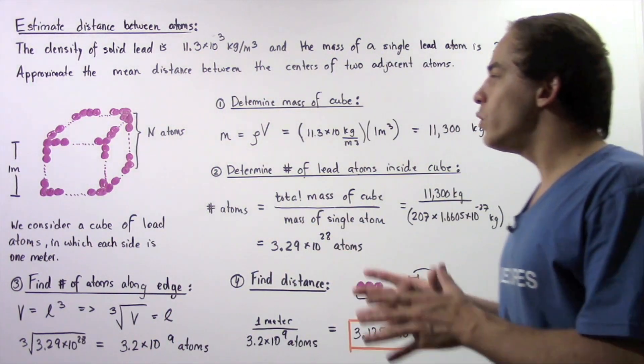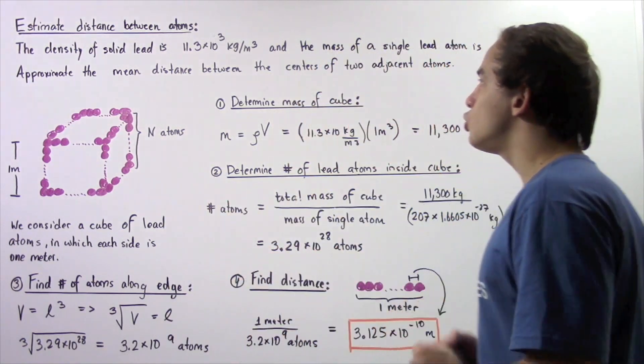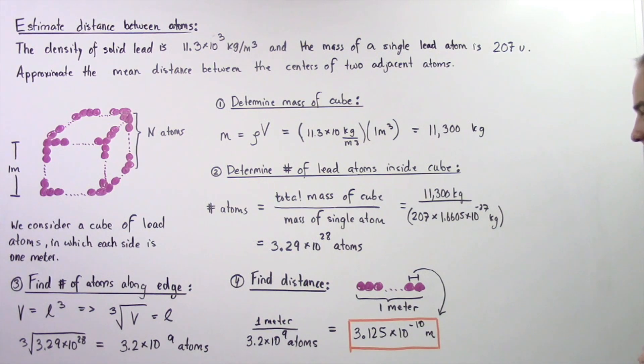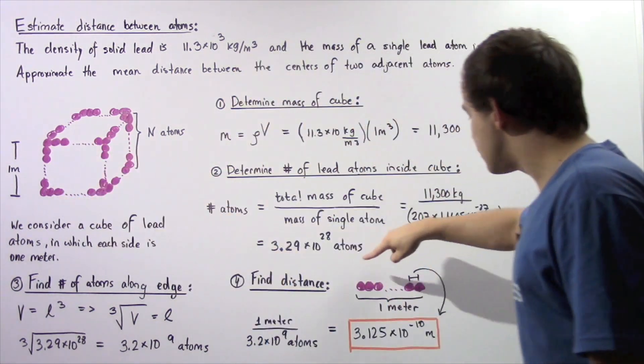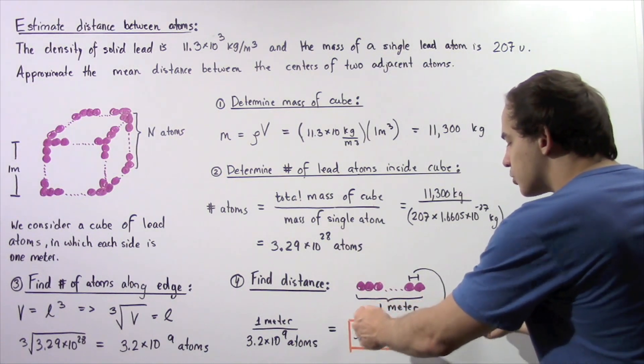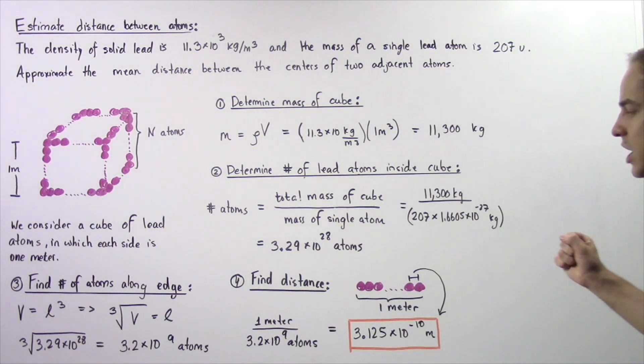Finally, in step four, we calculate what the distance between any two adjacent atoms is. So notice that the length of each edge as shown is one meter. So to calculate this distance between the centers of any two atoms,